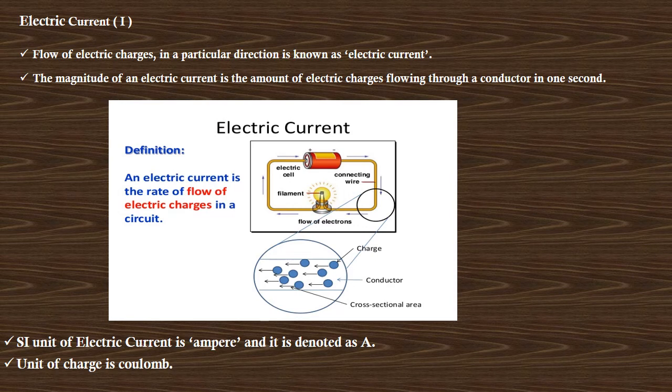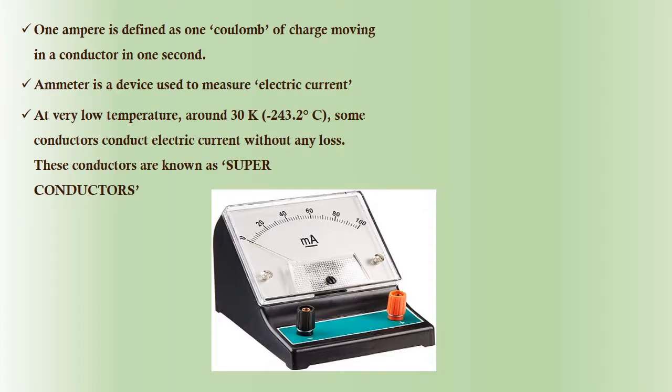Electric current: Flow of electric charges in a particular direction is known as electric current. The magnitude of an electric current is the amount of electric charges flowing through a conductor in one second. SI unit of electric current is ampere and it is denoted as uppercase A. Unit of charge is coulomb. One ampere is defined as one coulomb of charge moving in a conductor in one second. Ammeter is a device used to measure electric current.